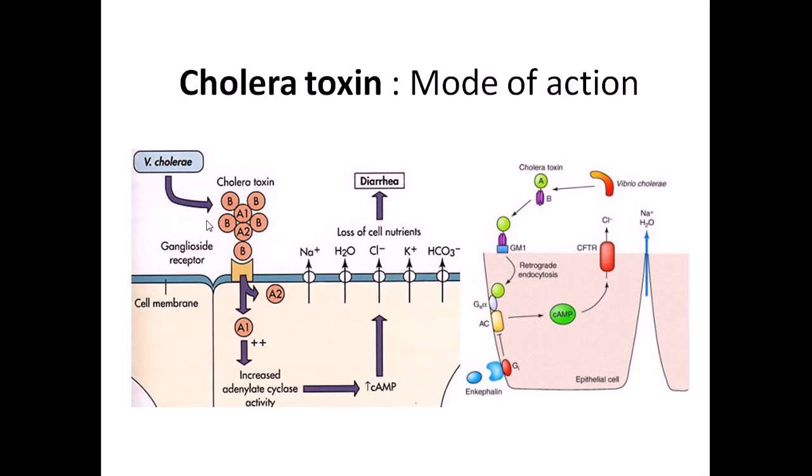So what we can see here - this is the toxin having five different B subunits and then two A1 and A2 are linked with each other. We call it all together an A subunit. B is helping the attachment, then A is released inside. Once A is released inside, it's cleaved into two separate units, A1 and A2. Among them, A1 is responsible for the maximum dangerous activities. A1 will go and increase the concentration of cyclic AMP inside our intestinal cells.